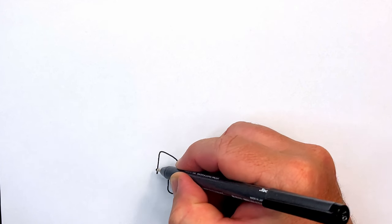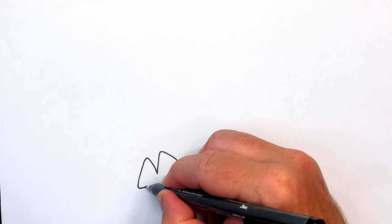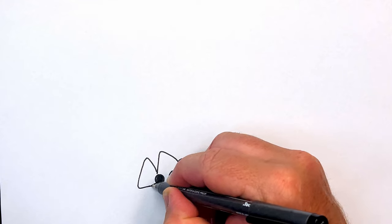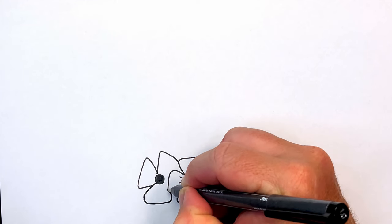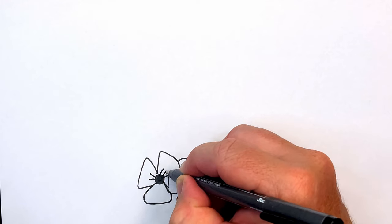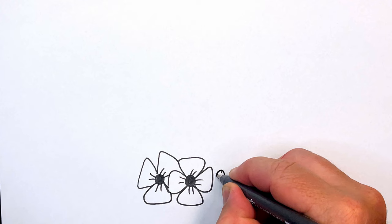The next part is to draw a poppy that is behind the other one. You can see there that I've created the middle and the two petals, and there's another petal that goes in behind there that you won't see. Again, flick out the details on the middle of the poppy.